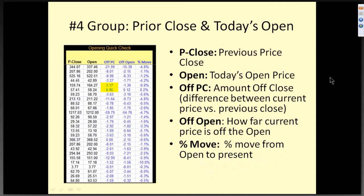Group four is just the prior day's close and today's open. The first column is the previous close. Then you have today's open, then the amount off the close — just the difference between the current price at the open and the previous close. Then off the open: how far the current price is off the open, and a percentage move from the open to the present. It's just some good reference material that I like to have handy.